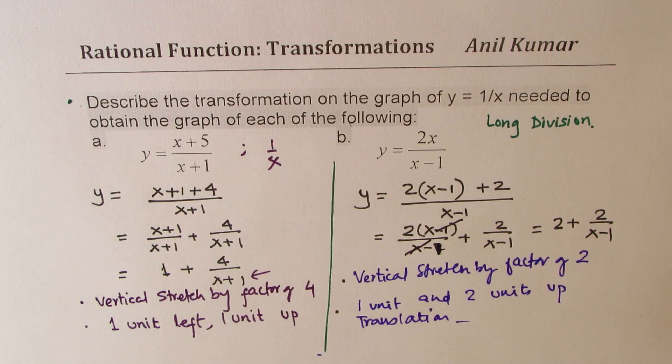So that is how you should work with rational functions. Split them into 2 parts. And then it is very simple to describe transformation with respect to the parent function 1 over x. I hope you understand it and appreciate it. Feel free to write your comments, share your views. And if you like and subscribe to my videos, that would be great. Thanks for watching and all the best.